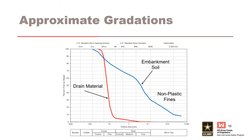The zone 1 embankment soil is broadly graded with 30% fines, 50% sand, and 20% gravel with approximately 15 to 20% cobbles and boulders. The drain was designed using Soil Conservation Service criteria in effect at the time from 1968. Those design criteria required the filter to be designed using the gradation curve for base material finer than 1 inch.